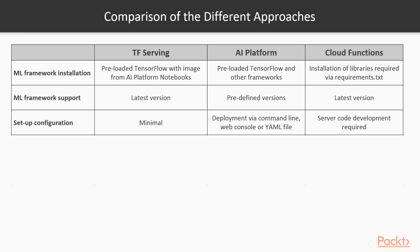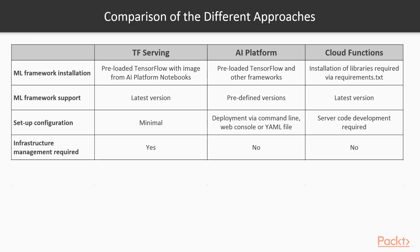Let's talk about setup and configuration. For TF Serving, as we'll see in the next video, it's quite minimal and easy. On AI Platform, you need to deploy your model either via command-line console or a YAML file, which is straightforward. Only for cloud functions do you need to develop some server code that is executed for the function. Regarding infrastructure management: TensorFlow Serving runs on a server, so you need to configure that server; if you want scalability you need a cluster of machines and a load balancer and must manage all of that.